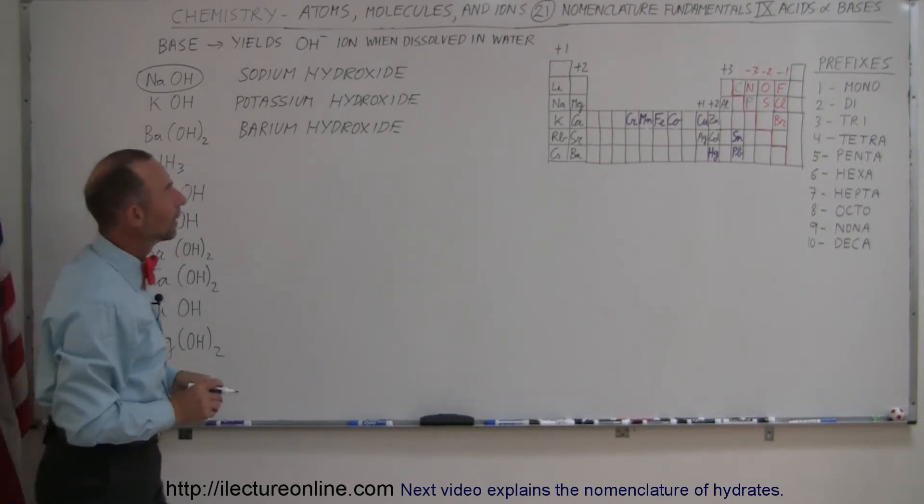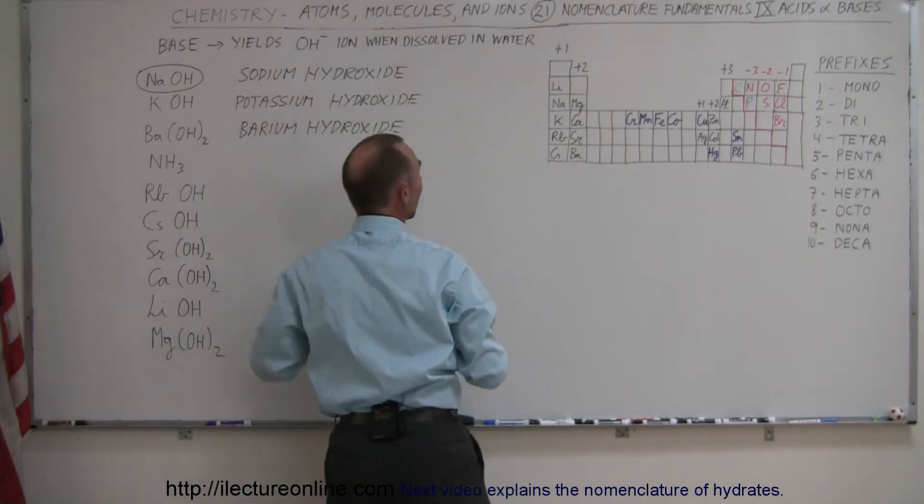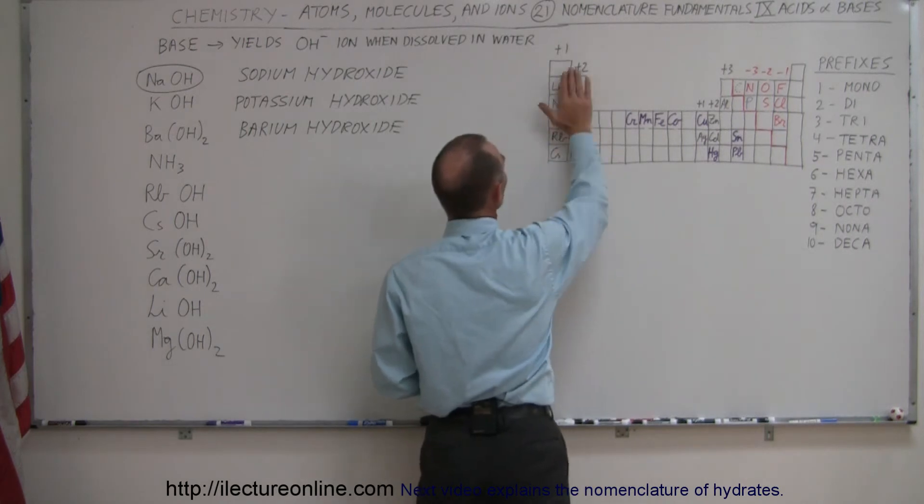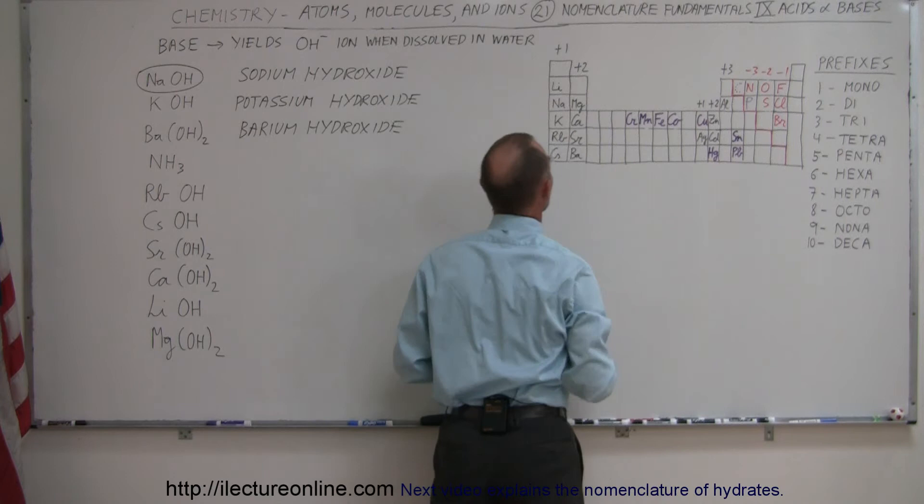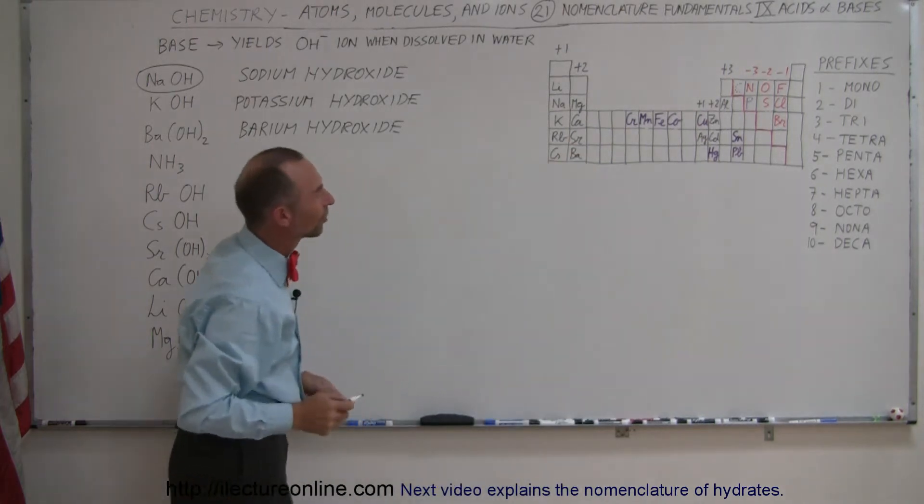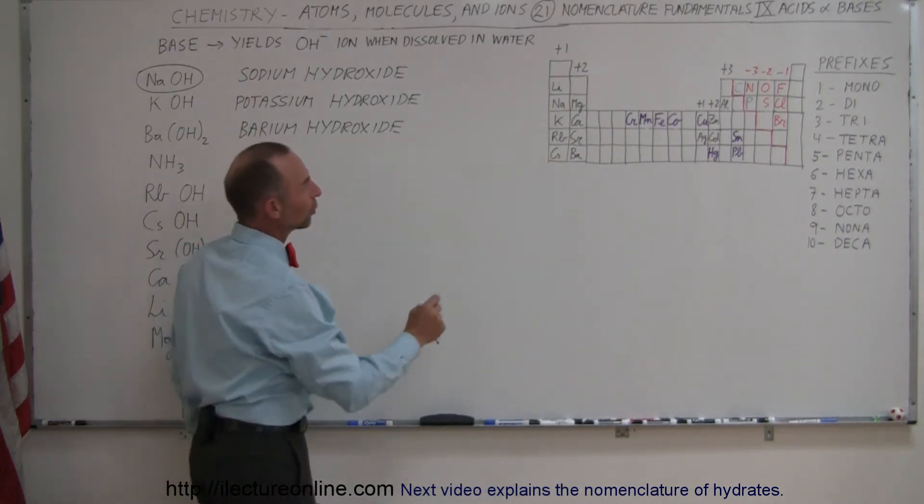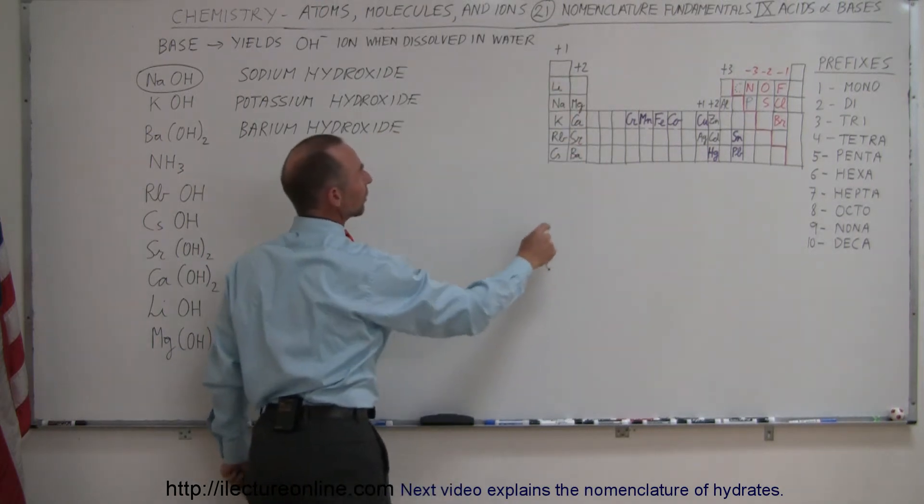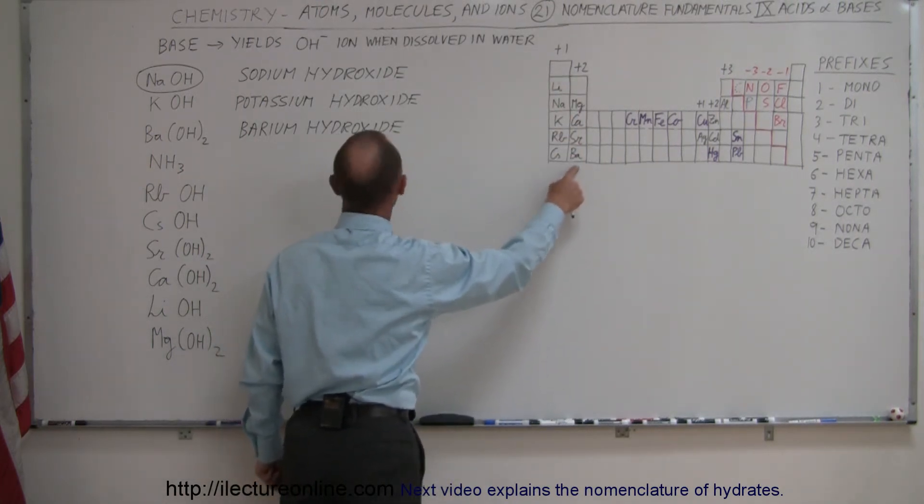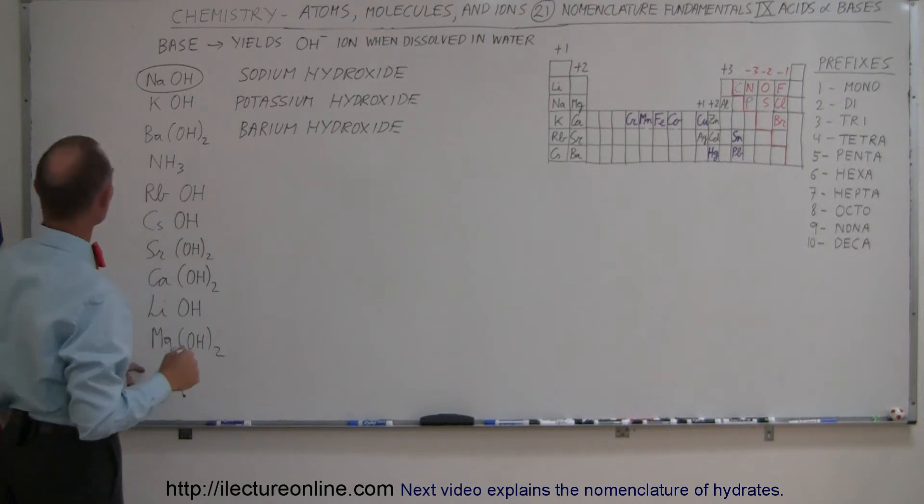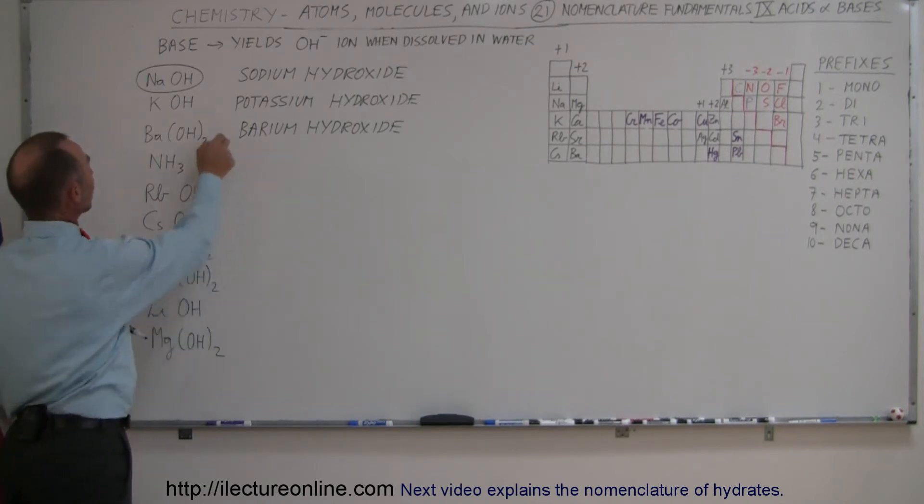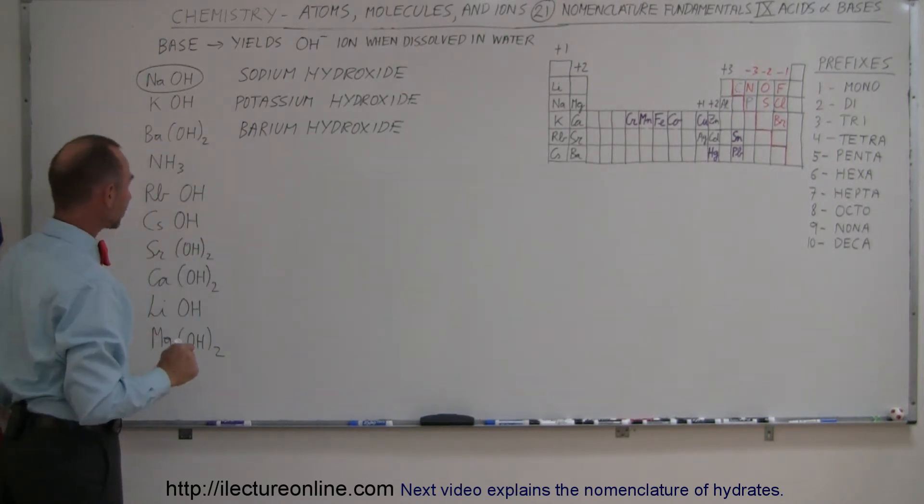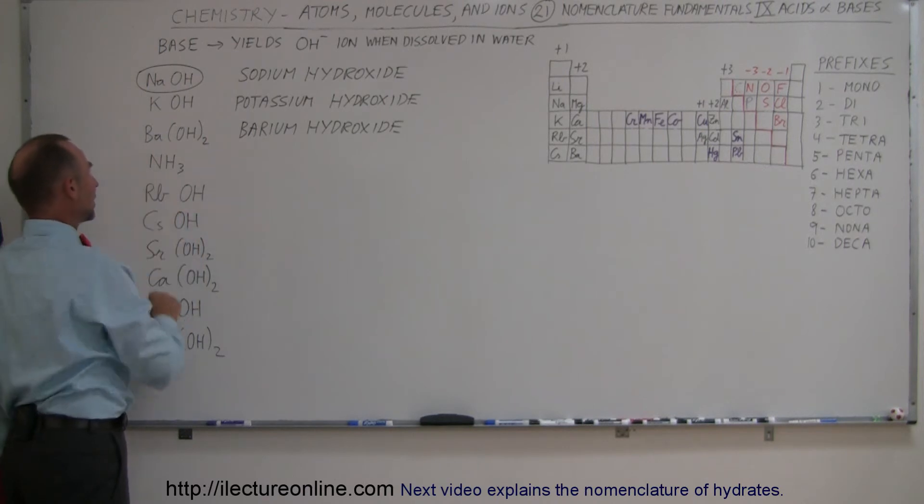Most of those, except for the nitrogen one, are all these elements right here—the alkali elements and the alkaline earth elements. Those can only be in a plus one and a plus two state. So if we're dealing with barium, we know that this will have to be linked up with two of the OHs because it needs the two negative charges in order to become a neutral molecule.